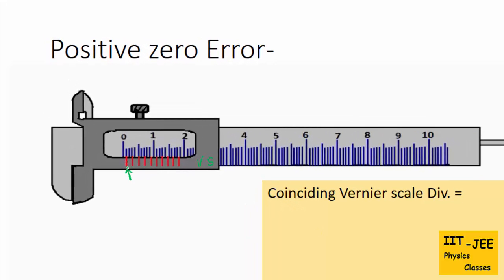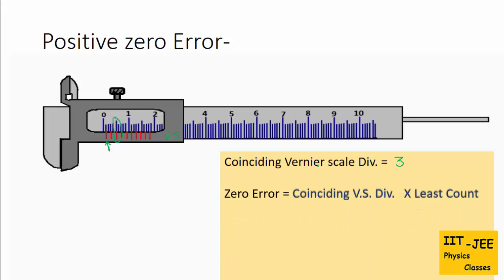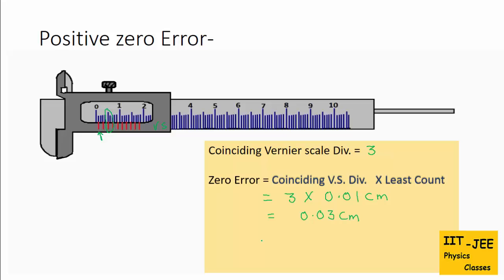Let's check: the first vernier scale division is not coinciding, second, third — the third vernier scale division is perfectly coinciding with the main scale division. So the coinciding division is 3. To find the zero error, multiply this coinciding vernier division by the least count. Three times 0.01 cm (the least count of the vernier scale, which we found in Part 1) gives 0.03 cm. As this is a positive error, we put a positive sign: +0.03 cm is the zero error of this vernier caliper.